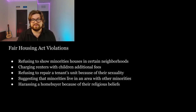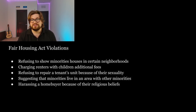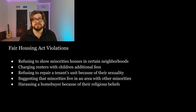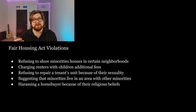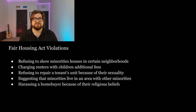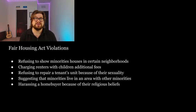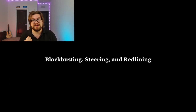Examples of FHA violations include refusing to show minorities houses in a certain neighborhood, charging renters with children additional fees, refusing to repair a tenant's unit because of their sexuality, suggesting that minorities live in an area with other minorities, and harassing a homebuyer because of their religious beliefs. Within these violations, there are a few specific ones we must cover for the exam: blockbusting, steering, and redlining.